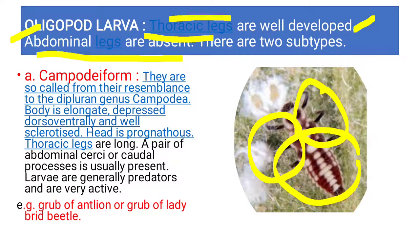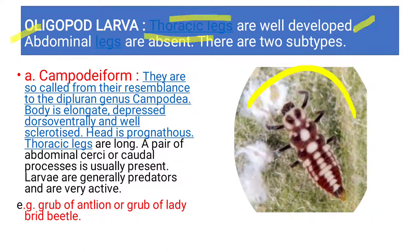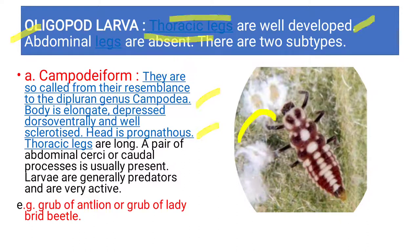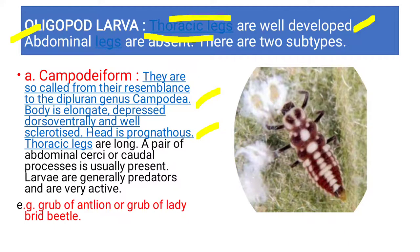The first type is the campodeiform larva. It resembles the genus Campodea, hence the name. The body shape is elongated and depressed — dorso-ventrally flattened — with proper sclerotization and chitin visible. The head is prognathous. The thoracic legs are long and well developed. There is also an abdominal cercus at the abdominal end. These larvae are very active predators. The grubs of ladybird beetles are campodeiform type.